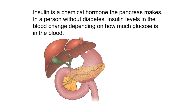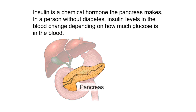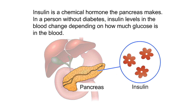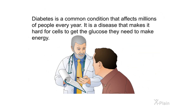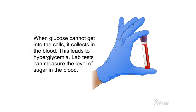Insulin is a chemical hormone the pancreas makes. In a person without diabetes, insulin levels in the blood change depending on how much glucose is in the blood. Diabetes is a common condition that affects millions of people every year. It is a disease that makes it hard for cells to get the glucose they need to make energy. When glucose cannot get into the cells, it collects in the blood, leading to hyperglycemia.